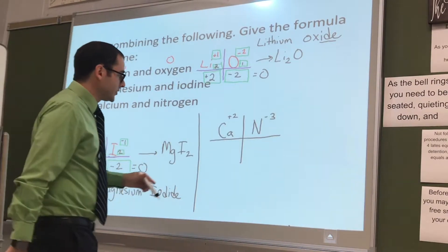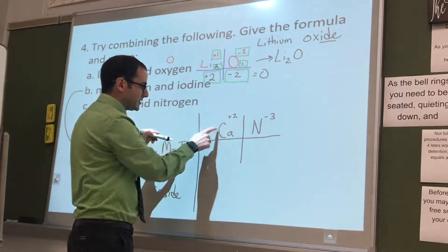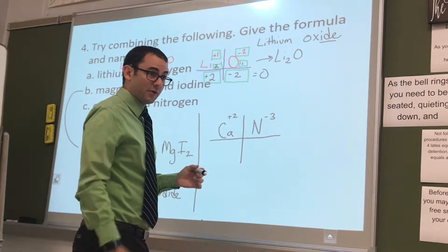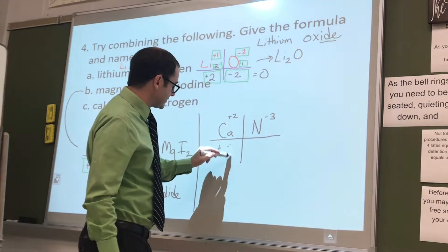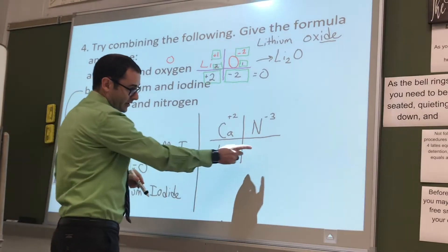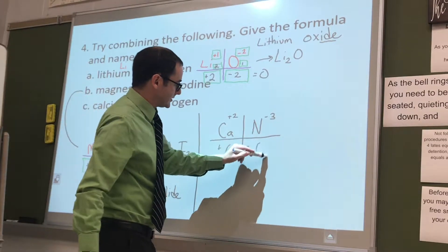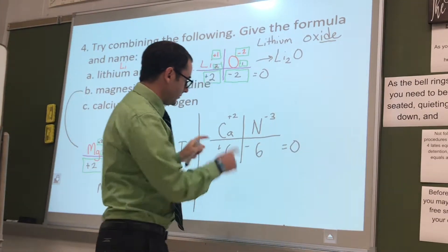Six, right? So, how do we get calcium to be six? Three. We need three, right? So, with that six, this is going to be positive six, right? This is going to be negative six, because they're going to equal zero.